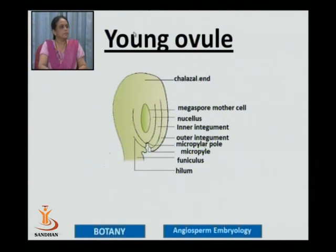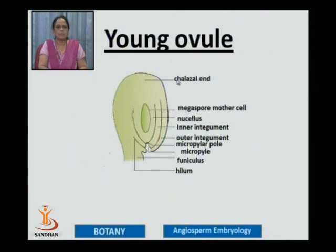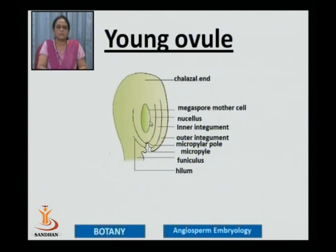The end just opposite to the micropyle is known as the chalazal region. A young ovule has different parts: the funiculus which is the stalk, two protective layers known as the outer and inner integuments, and the main body known as the nucellus. The wall of the nucellus represents the megasporangium, and inside the nucellus there is only one single megaspore mother cell which is diploid in nature.